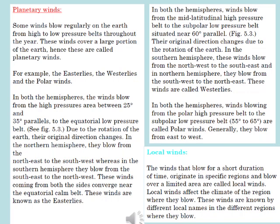In both hemispheres, winds blowing from the polar high pressure belt to the sub-polar low pressure belt, which is 55 degrees to 65 degrees, are called polar winds. Generally, they blow from east to west.